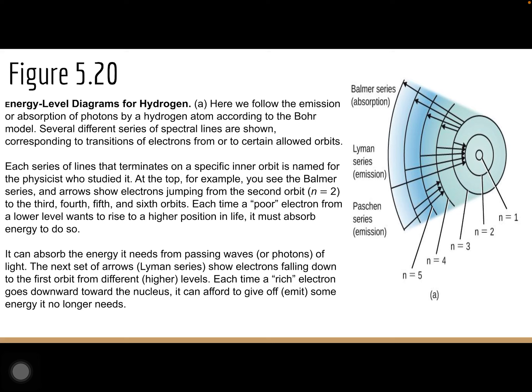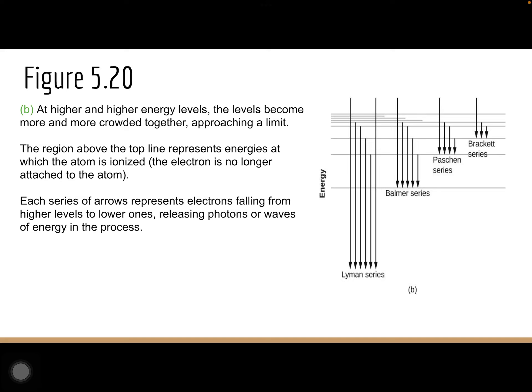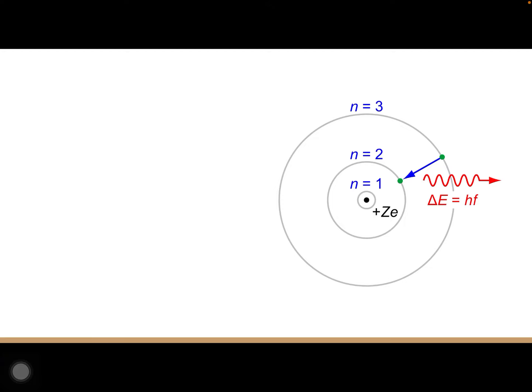To summarize — if an electron needs to go up an energy level, it absorbs energy; if it drops an energy level, it releases energy in the form of photons. As electrons reach higher and higher energy levels, the levels become more crowded together, approaching a limit. At the top, the atom is ionized — the electron is no longer attached. Each series of arrows represents an electron falling from a higher energy level to a lower one, releasing photons or waves of energy. The delta-E divided by the frequency corresponds to the photon of light released, allowing us to see a certain color.